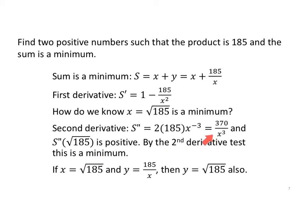The second derivative test: second derivative is positive or concave up. Concave up means I'll have a minimum. So if x equals the square root of 185 and y equals 185 over the square root of x, then y equals the square root of 185 also. The product is 185 and the sum is a minimum, confirmed by the second derivative test.